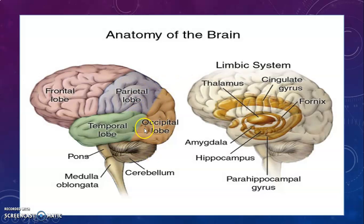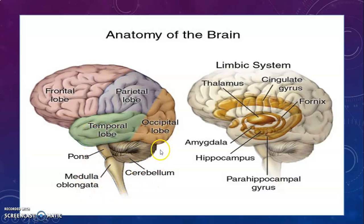First of all, we see the anatomy of the central nervous system. This is our brain. The brain has mainly four parts: frontal lobe, parietal lobe, occipital lobe, and temporal lobe. Here is the pons, medulla oblongata, and cerebellum. And this is the thalamus and hypothalamus and all other parts. This is necessary to understand the actual position of each and every part of the brain.